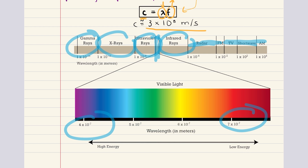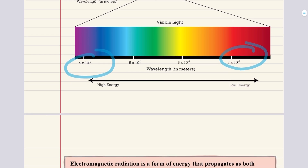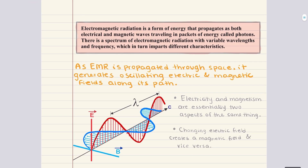This diversity allows electromagnetic radiation to interact with matter in various ways, from transmitting radio signals to penetrating the body for medical imaging. As electromagnetic radiation moves through space, it generates oscillating electric and magnetic fields along its path. A changing electric field induces a magnetic field, and vice versa. This oscillation behavior allows electromagnetic radiation to propagate as discrete packets of energy, or photons, which interact with matter in diverse ways.